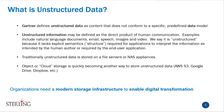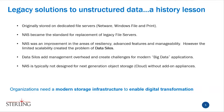Traditionally we've stored unstructured data on file servers or NAS appliances — NAS being network attached storage. There's also a newer way of storing unstructured data with the advent of cloud, using different protocols than traditional file. That's typically AWS S3, Google Drive, Dropbox, things of that nature. So let's have a little history lesson on how we got here.